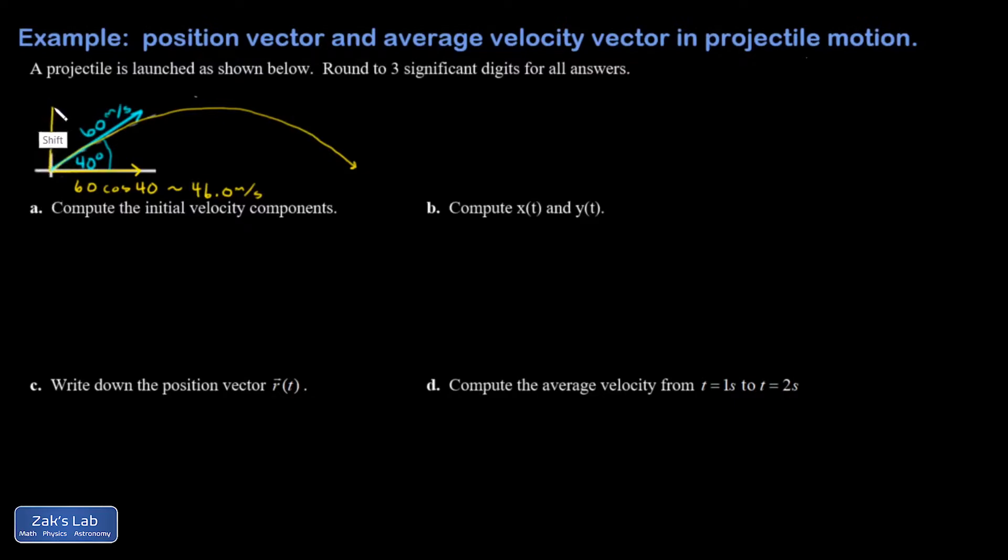And I get for that approximately 46, and we're asked to use three sig figs, 46.0 meters per second. The y component is going to be 60 sine 40, and for that I get approximately 38.6 meters per second.